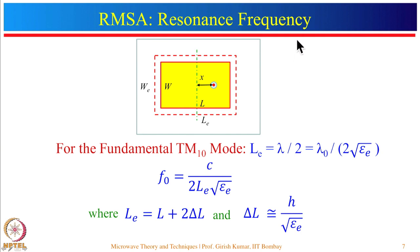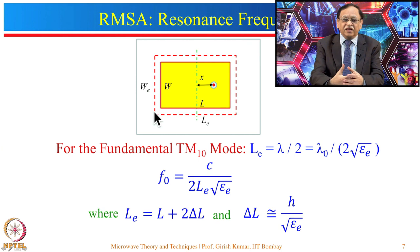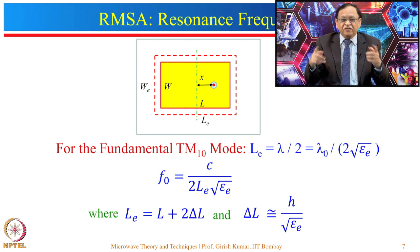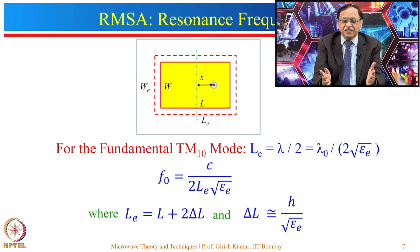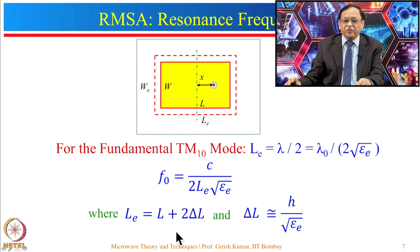Let us see how we can find the resonance frequency of a microstrip antenna. We have a rectangular patch with length L and width W. The dotted line represents an effective length L_e and effective width W_e. The effective length accounts for fringing fields from the edges, which produce additional capacitance. This capacitance is compensated by extending the length outward, so L_e = L + 2ΔL, where ΔL is the extension in each direction.